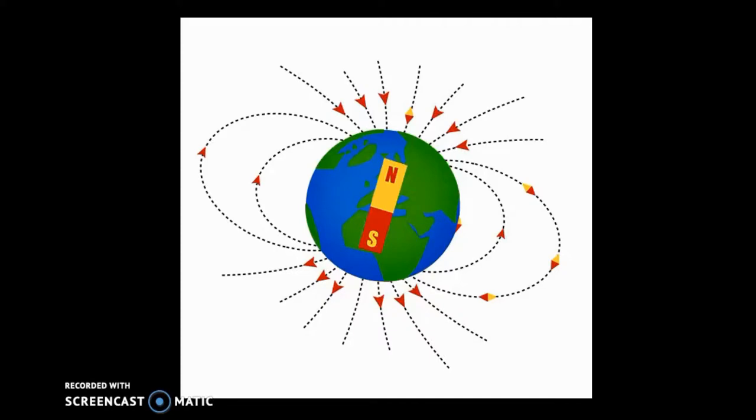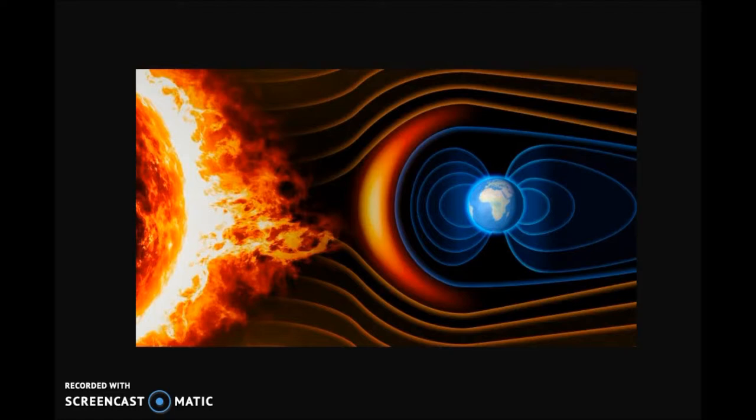The Earth is a very large magnet. Just like all magnets, it has a north and south pole. The magnetic field around the Earth protects us from the powerful solar winds of the Sun that would otherwise strip away the ozone layer that protects us from harmful radiation.